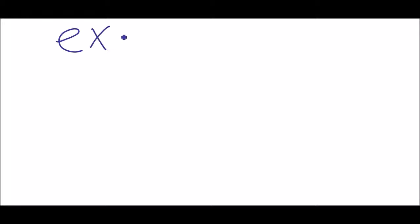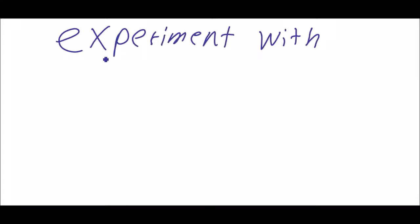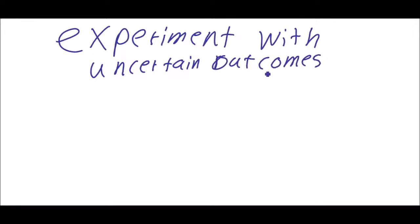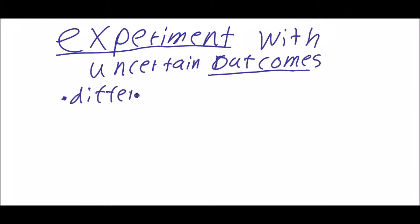First we have to state that a game of tennis is an experiment from the point of view of probability theory — an experiment with uncertain results or outcomes. We call the results of an experiment an outcome. We have an experiment with different outcomes and of course we don't know when they will occur.